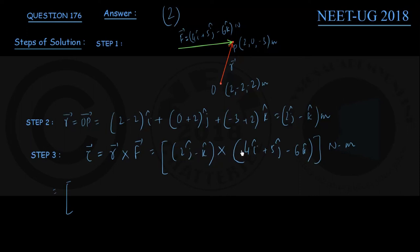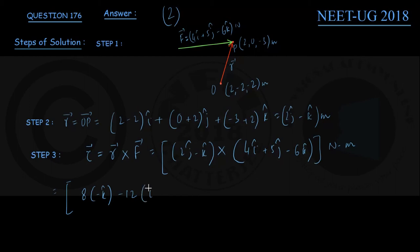Expanding the cross product term by term: 2j × 4i gives 8(j × i) = −8k. Then 2j × 5j: j × j is a null vector, so this is zero. Next, 2j × (−6k) gives −12(j × k) = −12i. Then (−k) × 4i: the numerical part is −4 and k × i = j, giving −4j.